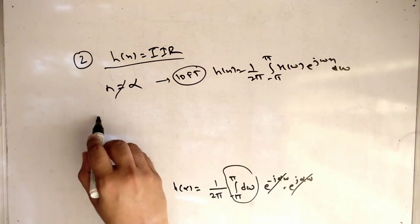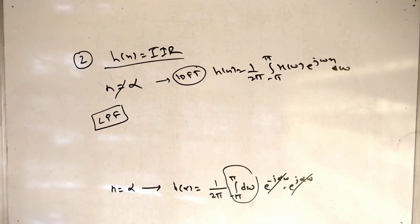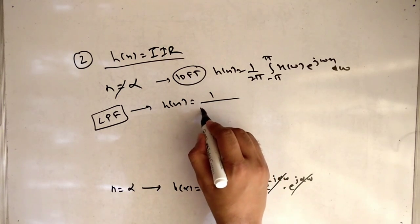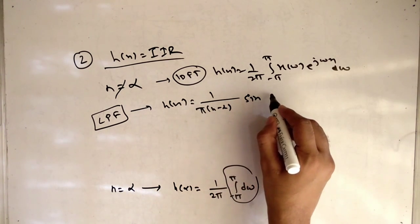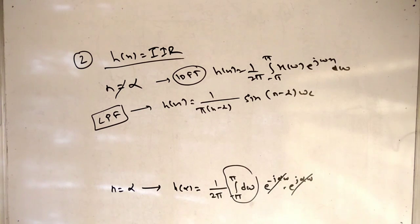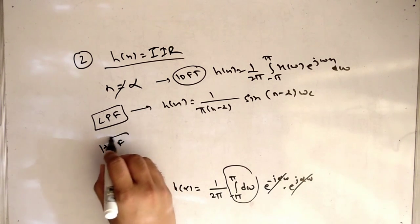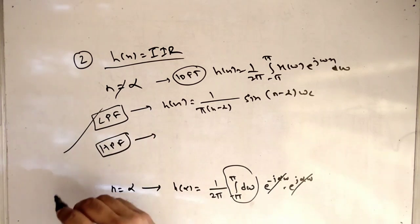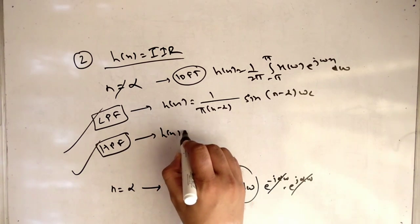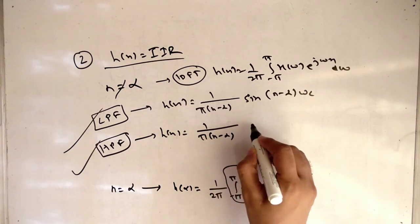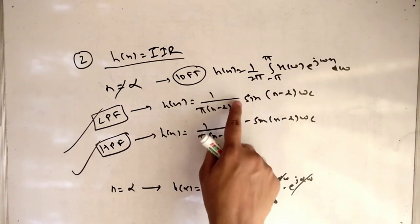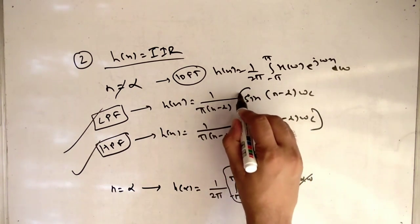For a generalized low pass filter (LPF), the standardized formula is: H of N equals 1 by pi times (N minus alpha) times sin of (N minus alpha) times omega C. For a high pass filter (HPF), the formula is: H of N equals 1 by pi times (N minus alpha) minus sin of (N minus alpha) times omega C. The basic difference between the two is the plus sign versus the minus sign.